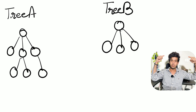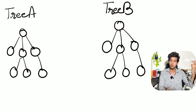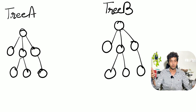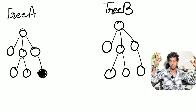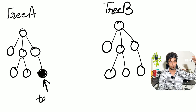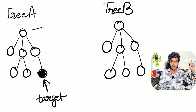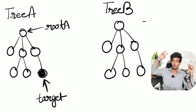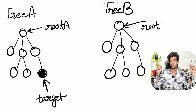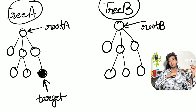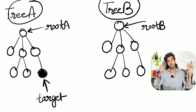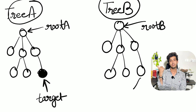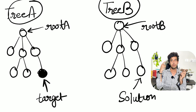You are given the two roots of the trees as input — root A and root B — because the root is the only thing you need to traverse a tree. You are also given one target node in the first tree A. What you need to do in the solution is find the corresponding node in tree B — the same target node that corresponds to tree B.